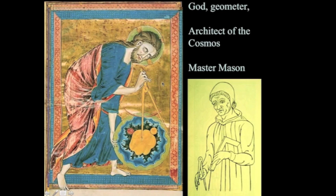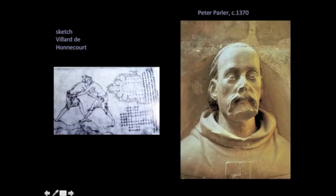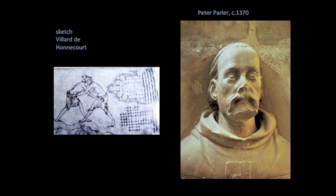We saw last time this image of God the Geometer — something about making geometrical figures that controls chaos and creates a world. Here is a drawing of a medieval architect holding as his tools the compass and the square, the same tools that God used to create the universe. This is a carving of a late Master Mason, Peter Parler. The image on the left is a drawing from a lodge book used in medieval Masonic lodges — the place where they would get together, store textbooks, teach trade secrets, and organize building commissions.